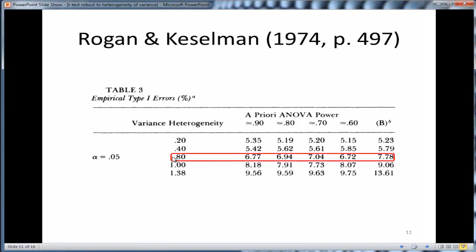Now, things break down once you hit variance coefficient of variation of 0.80. You can see now we're up in the 6s and the 7s. So we're not keeping alpha at 5% in this case. And that's true if the sample sizes are equal. So it's an interesting finding, I think.